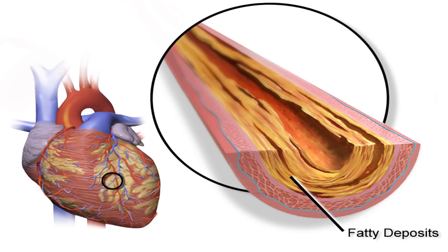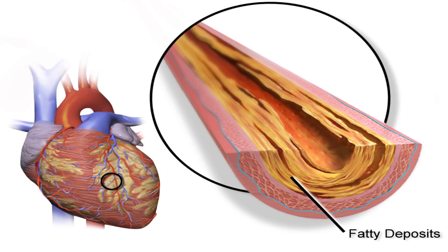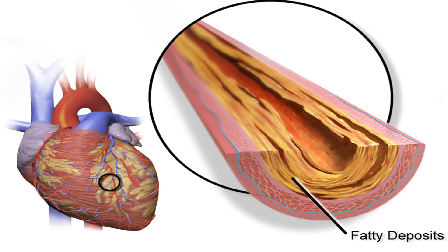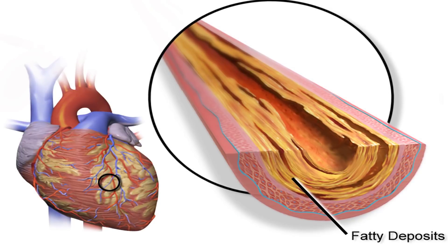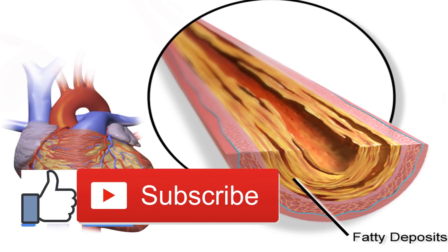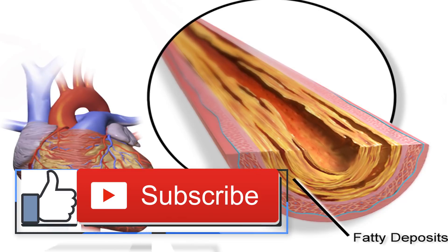What is coronary artery disease? Overview: Coronary artery disease, CAD, is impaired blood flow in the arteries that supply blood to the heart. Also known as coronary heart disease, CHD, CAD is the most common form of heart disease and affects approximately 16.8 million Americans.